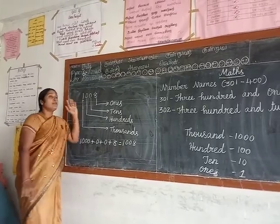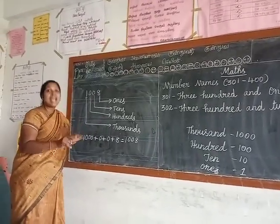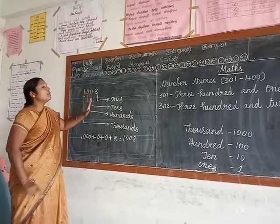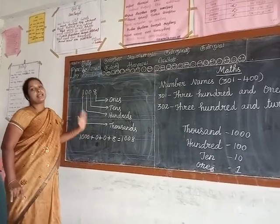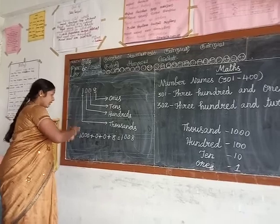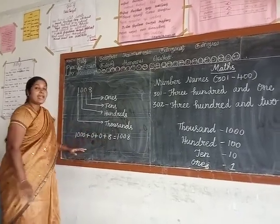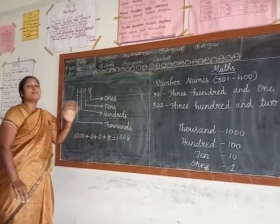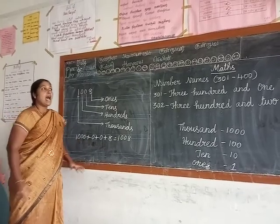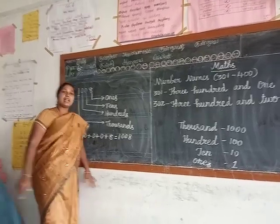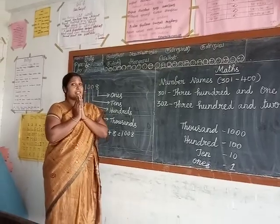Okay children, first, when you are given any number, first count the digits. Then divide the number into 1, 10, 100, and 1000 place values. Then write and spell the number — that way you can spell any number very easily. I hope you all understand. Thank you very much.